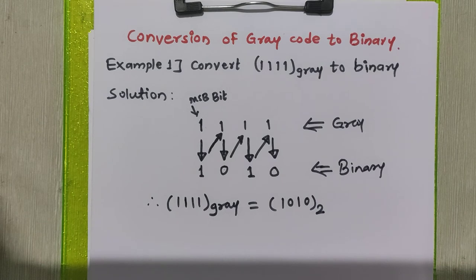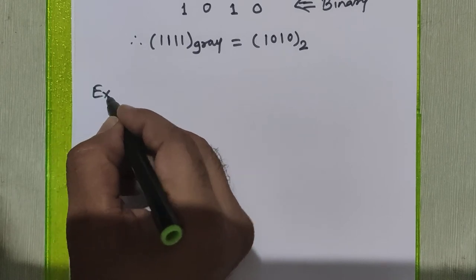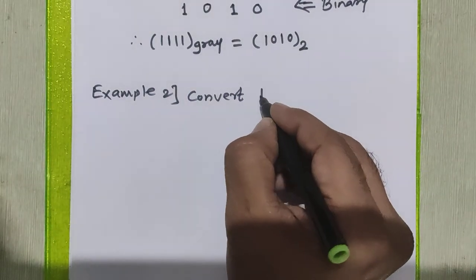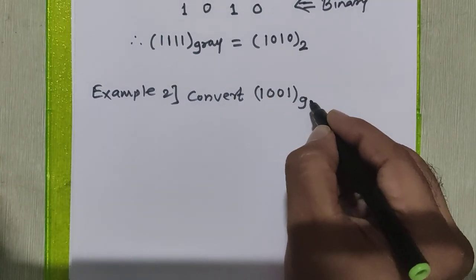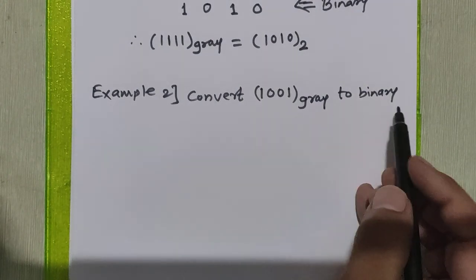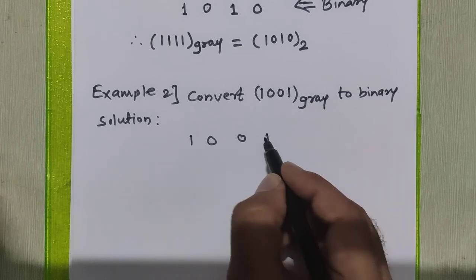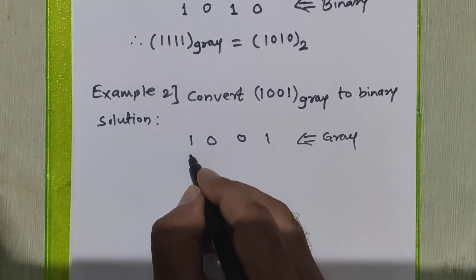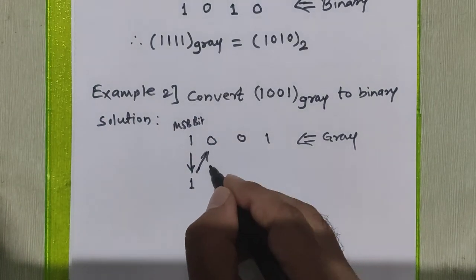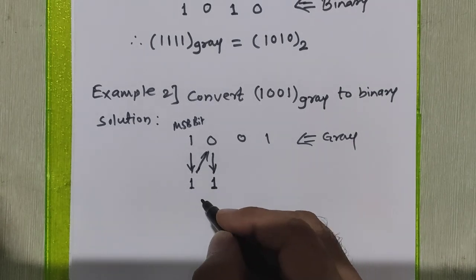To further understand grey code to binary code conversion, we will see one more example. In the second example, we are going to convert 1001 grey to binary. We will first copy the grey code as given. In the first step, we copy the MSB bit as it is. To get the next bit, we add the first binary bit with the second grey code bit — one plus zero is one, no carry generated.